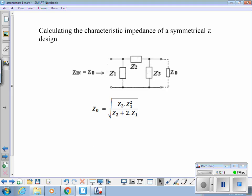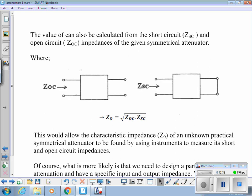For the symmetrical pi, the formula looks just a little even bit more unwieldy. And again, I don't think there's any great value in us calculating half a dozen of them, because it isn't something that you'd want to do. But what you might want to do, is an unmarked attenuator in front of you, that you know is a symmetrical attenuator, you might want to find out its characteristic impedance, so that you can connect it to the right load.